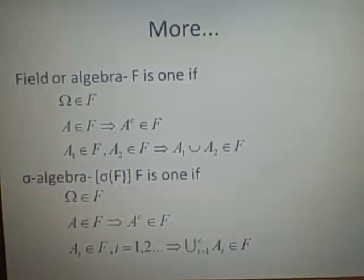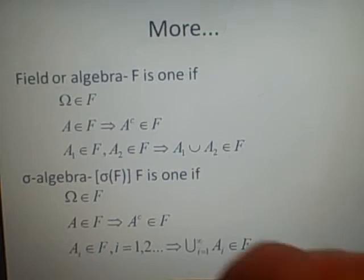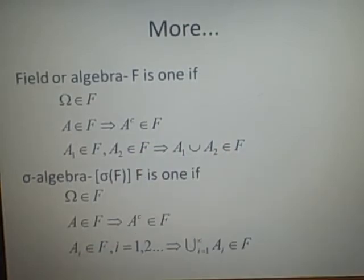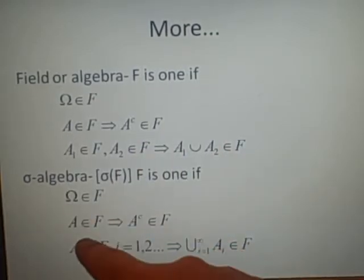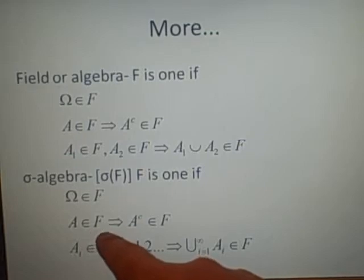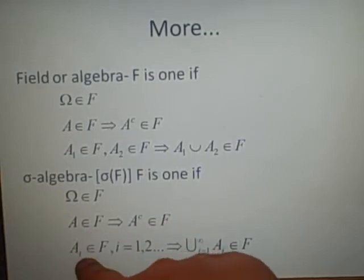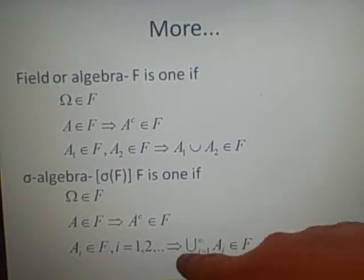Right, a σ-algebra. And that's written σ(F), where F is our set. F is one if Ω is in F, A is an element of F, then the complement's in F. And Aᵢ is an element of F, i is 1, 2, anything up to infinity. The union of all the different elements are an element of F.